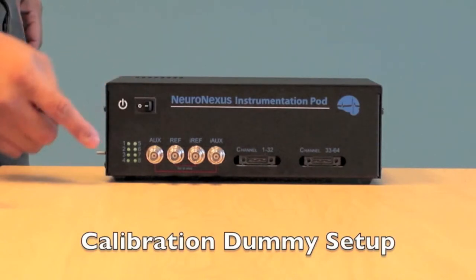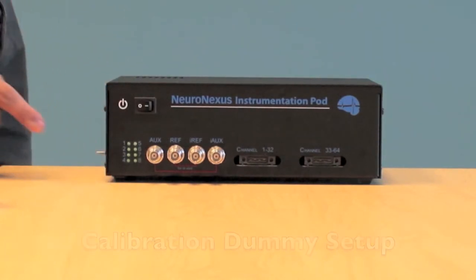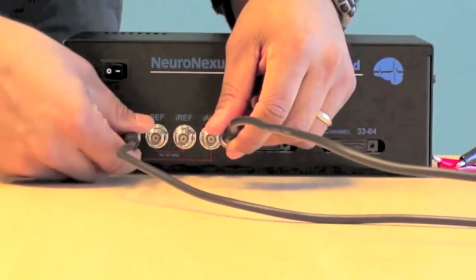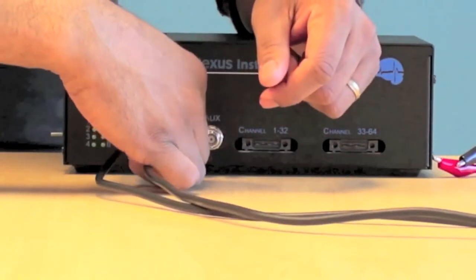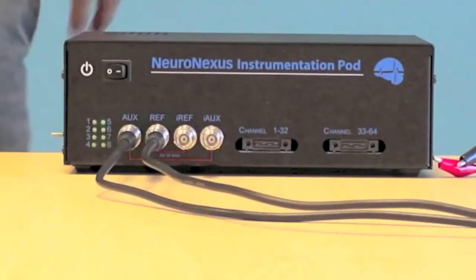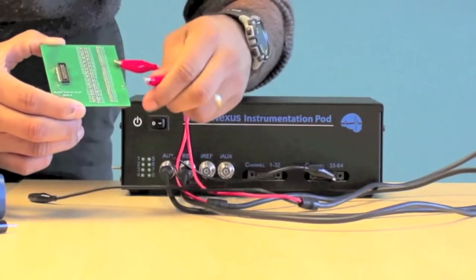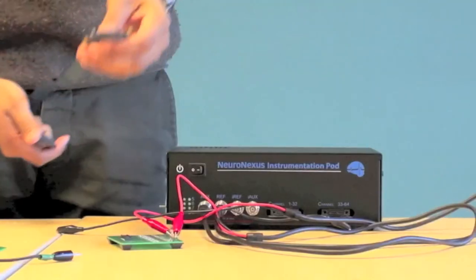Turn the power on and make sure the lights are illuminated. Take the black BNC to alligator cords and plug them into the AUX and REF inputs on the front panel. Then take the red pins and pin them to the AUX and REF pins on the dummy.